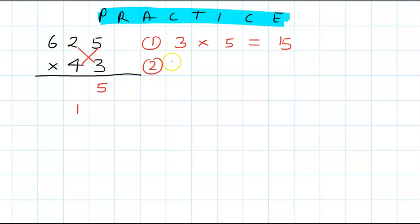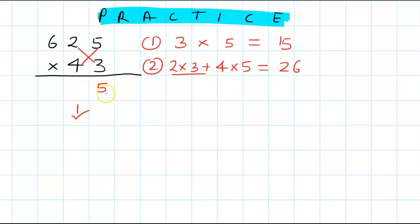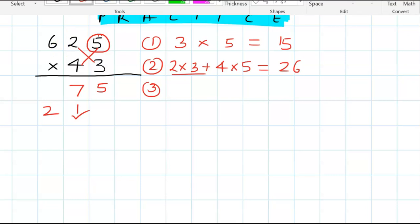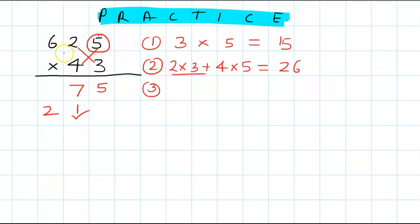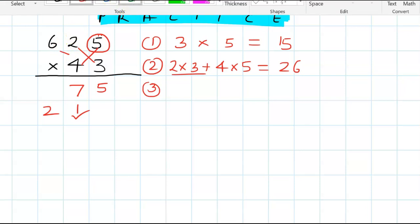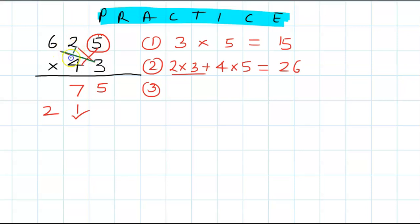Step 2: 2 times 3 plus 4 times 5 = 6 plus 20 = 26, plus carry 1 gives 27. Write 7 and carry 2 forward. Now hide the 5 and move to the next cross.